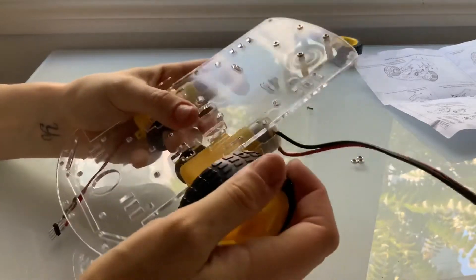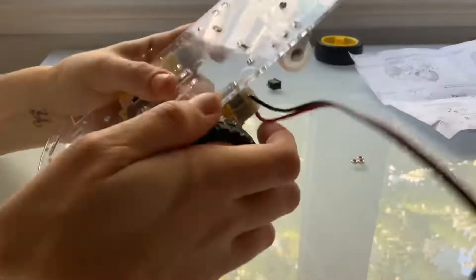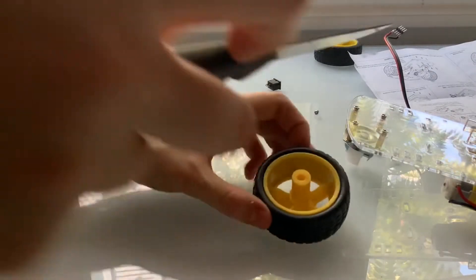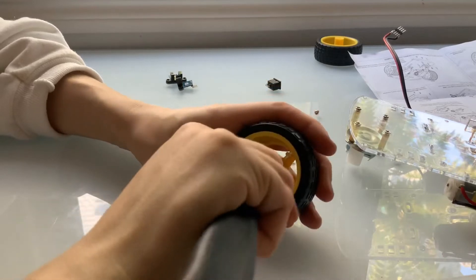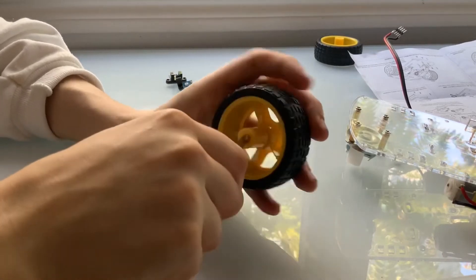They have a little notch on the inside. You're going to need to push it all the way in. The yellow plastic should essentially be touching the motor body.